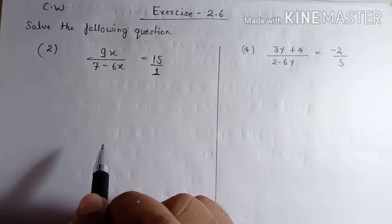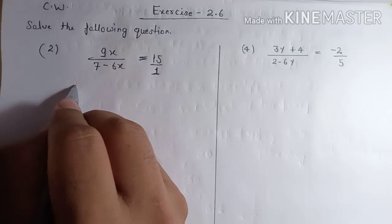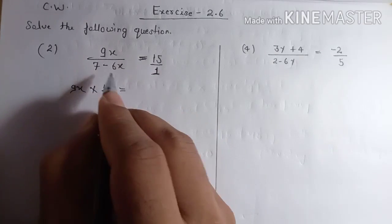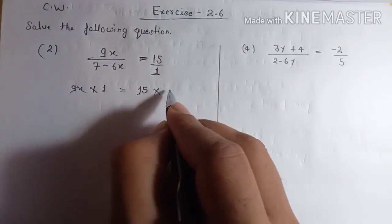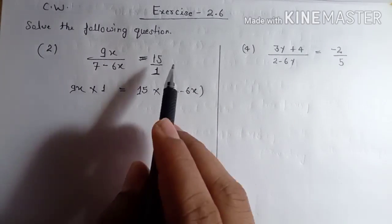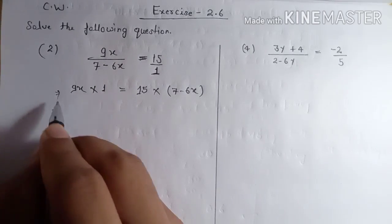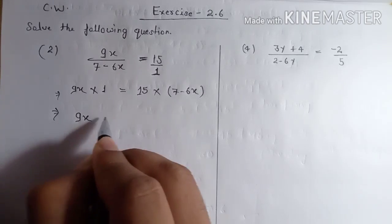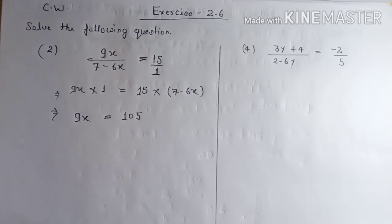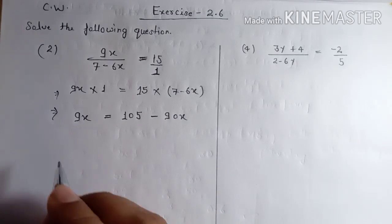Now do the cross multiplication: nine x is multiplying one, and fifteen is multiplying seven minus six x. You can write it as seven minus six x into fifteen — you can follow any order. So it is nine x is equal to fifteen times seven, which is 105, and fifteen times minus six x is minus 90x.